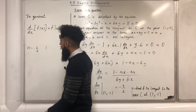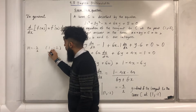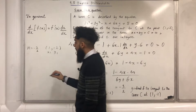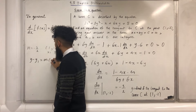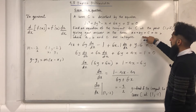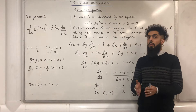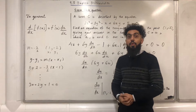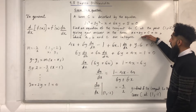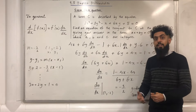The tangent passes through the point (1, −2), which I label as (x1, y1). Substituting x1, y1, and m into y minus y1 equals m times (x minus x1), and then rearranging, gives 3x plus 2y plus 1 equals 0, which is of the form ax plus by plus c equals 0 where a, b, and c are integers. In this case, a equals 3, b equals 2, and c equals 1.